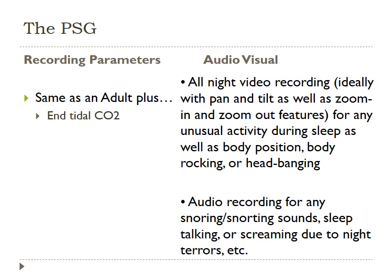As far as the polysomnogram itself, the recording parameters are going to be exactly the same as adults, plus the addition of end-tidal CO2. For audio-visual equipment, we want all-night video recording, ideally with pan and tilt as well as zoom in and zoom out features. This is used for any unusual activity during sleep, body position, body rocking, or head banging.